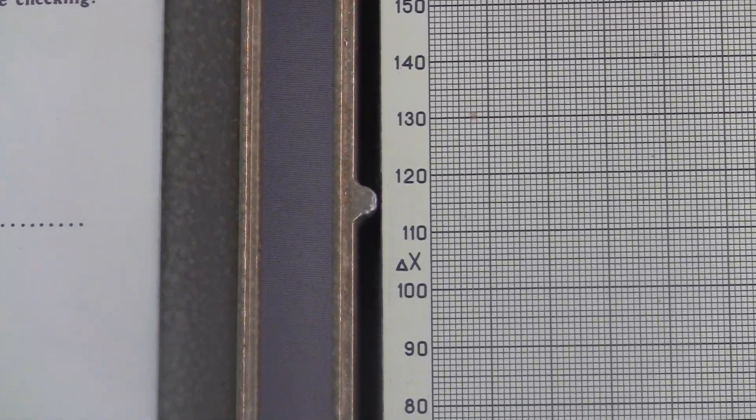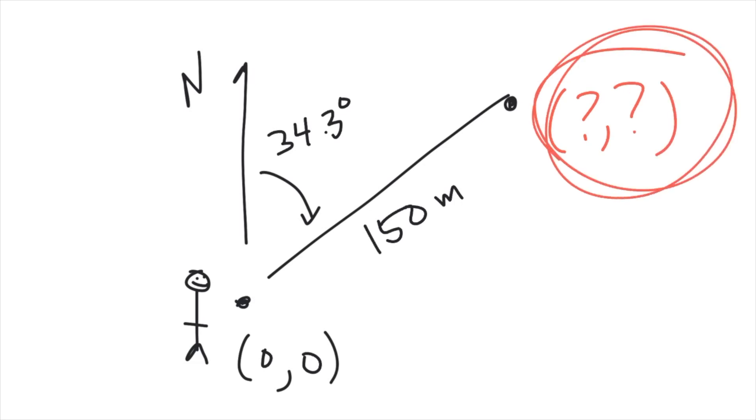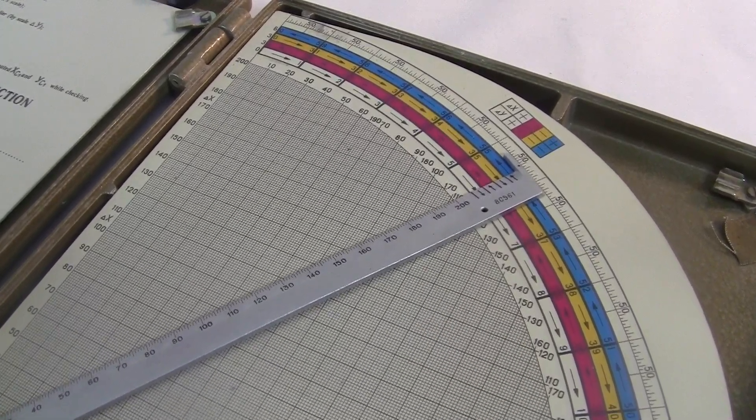But we don't need to get into all that. Let's just try a simple one. Let's say I want to know the coordinates of a point 150 meters away, where the angle measured here is, say, 34.3 degrees. Turns out there are a few oddities about Soviet surveying that I need to clear up.